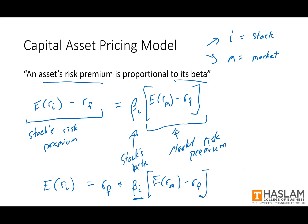Applying this: if beta equals 1, then the expected return for the stock becomes equal to the expected return for the stock market — the stock and the market have the same expected return. If beta is greater than one, the expected return for the stock ends up being greater than that of the market. And if beta is less than one, the expected return for the stock becomes less than the expected return for the market.